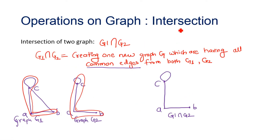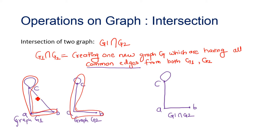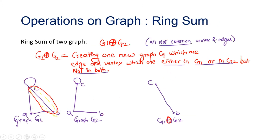The next operation is graph intersection, represented by G1 intersection G2. Here we create one new graph G which has all the common edges from both graphs. To find the intersection, we look for edges which are common in both graphs, take only those edges, and that is the result.